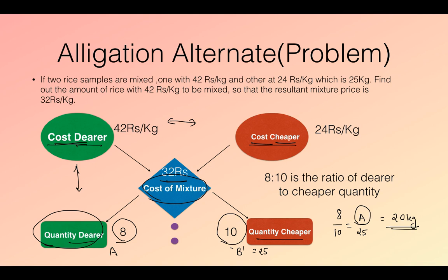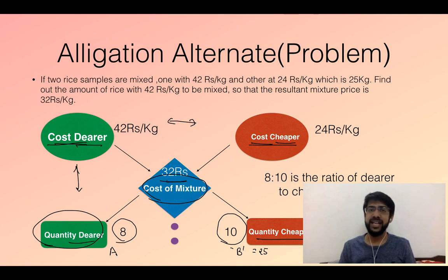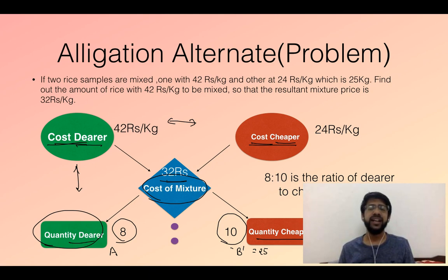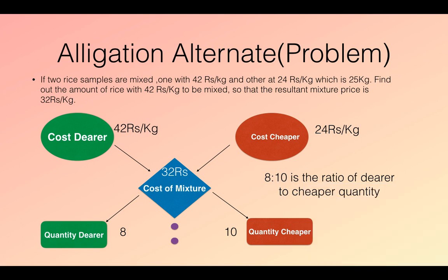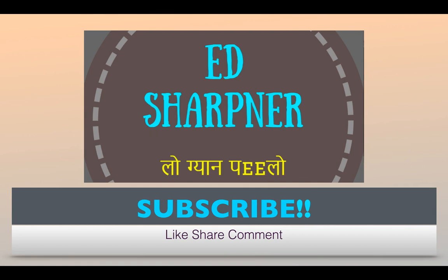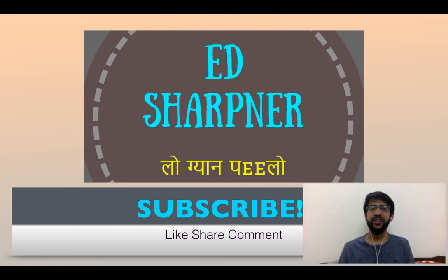All mixture and allegation problems can be solved by remembering the mixture equation involving six quantities and the allegation alternate method. The allegation medial method is also known as the weighted mean method. We will cover more problems if you request them in the comment section. If you are a GATE aspirant, please let us know your branch so we can select previous GATE problems accordingly. Please hit the subscribe button, like and share this video, and let us know what more topics you want to study.